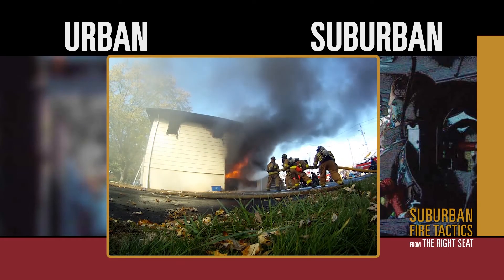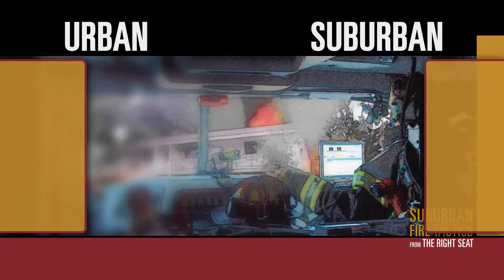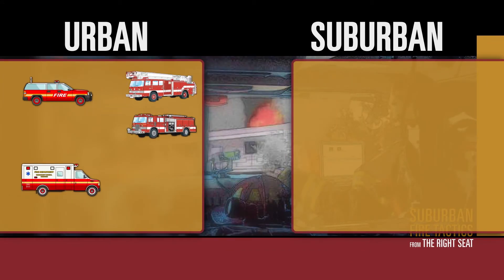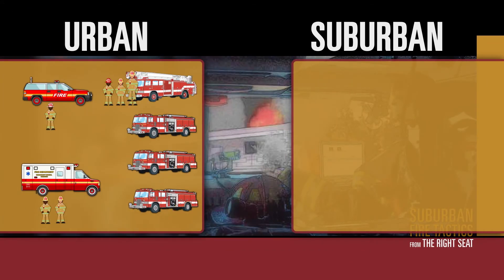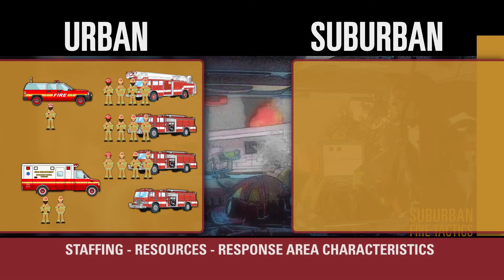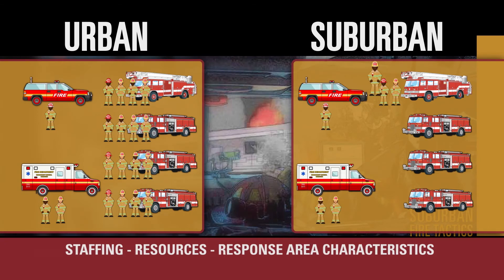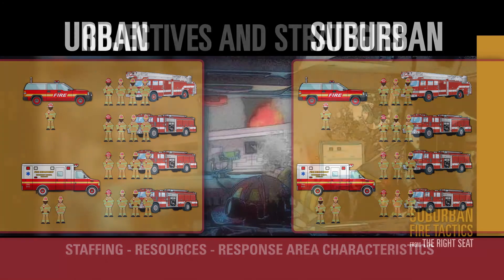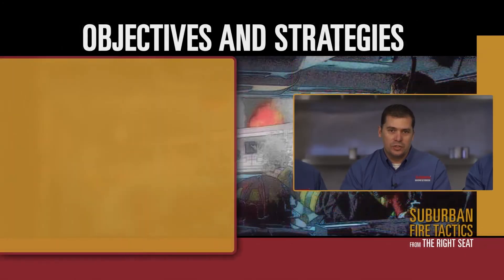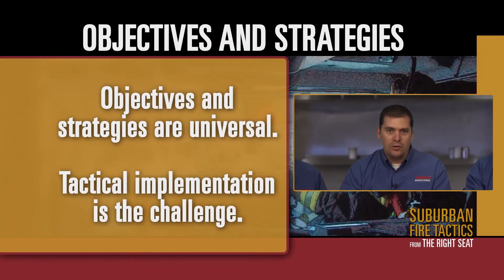So, what are the major differences between urban and suburban firefighting tactics? As depicted in this visual graphic, the main differences are staffing, resources, response area characteristics, such as time and distance of responding units. The objectives and strategies in the fire service are universal for any demographic — urban, suburban, and rural. However, the true challenge is tactical implementation.